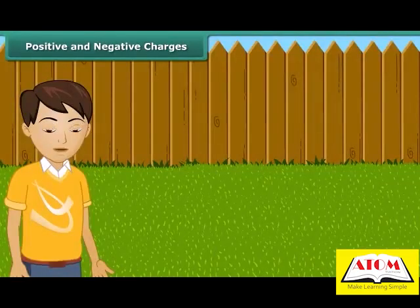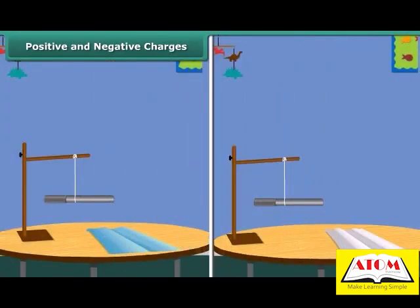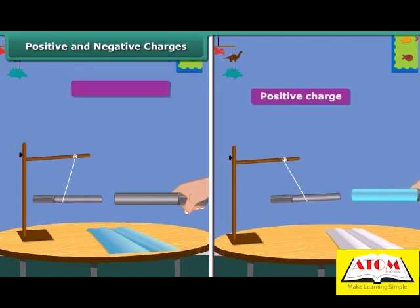The charges produced in the ebonite and the glass are different in nature. These two kinds of charges are called positive and negative charges. The positive charge is shown by the plus sign and the negative by the minus sign.